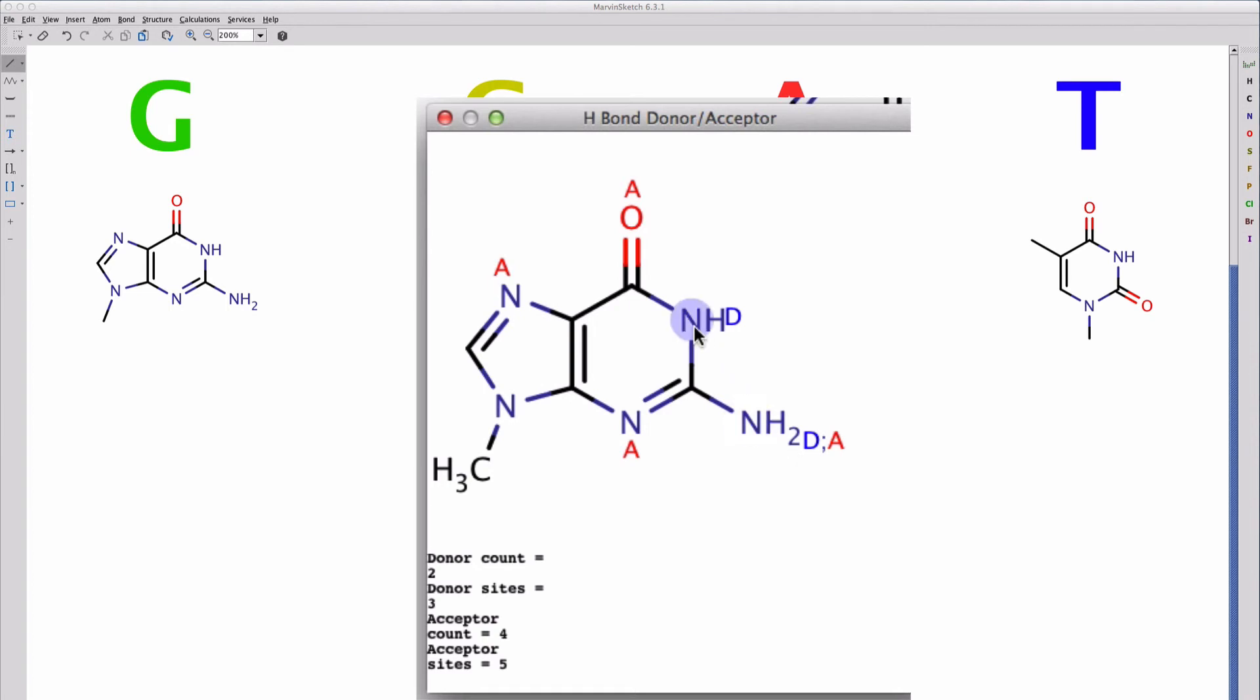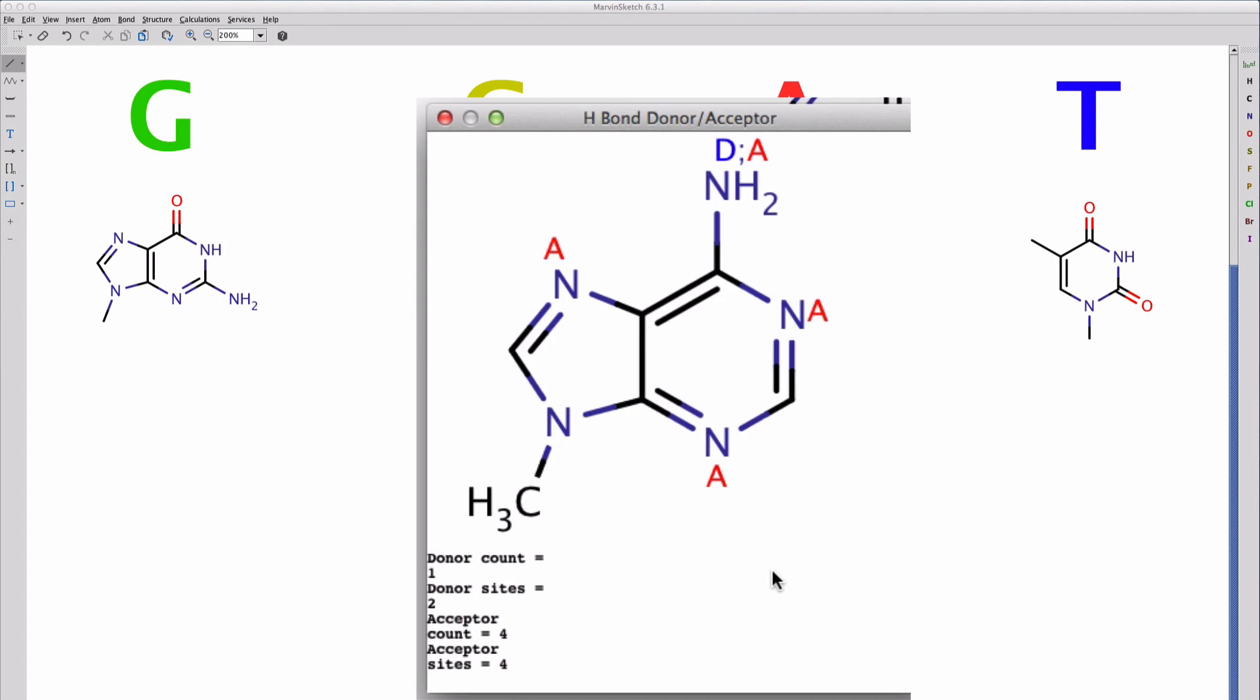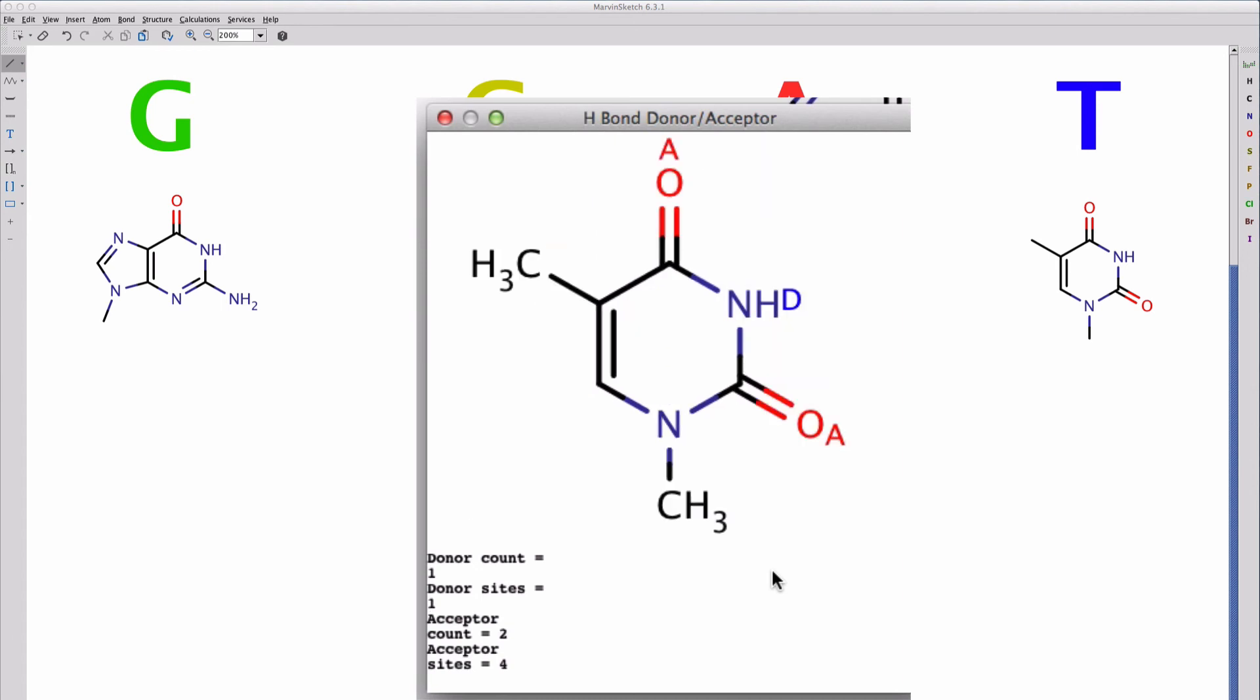And the other atoms are donors or acceptors. They're acceptors if they have lone pairs. There's cytosine, there's adenine, and there's thymine.